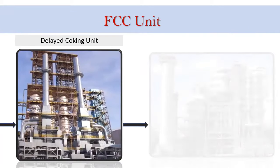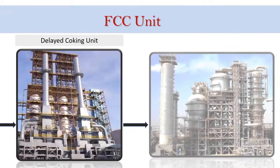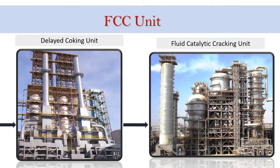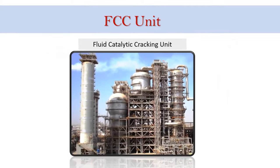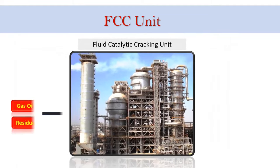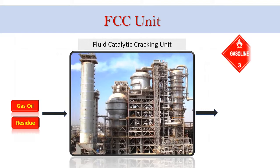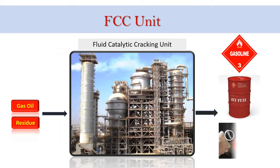The gas oil feed for the conventional catalytic cracker comes primarily from the atmospheric column, the vacuum tower, and the delayed coker. The main purpose of the FCC unit is to convert high boiling petroleum fractions to high-value transportation fuels such as gasoline, jet fuel, and diesel.